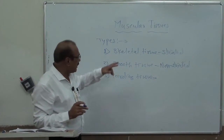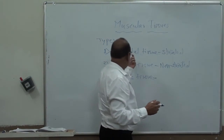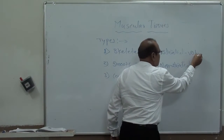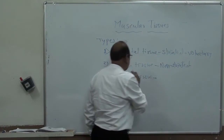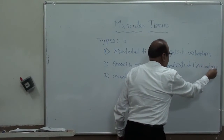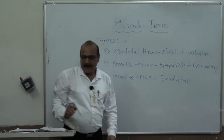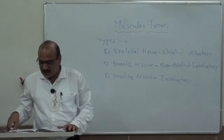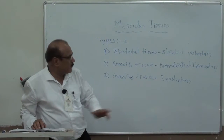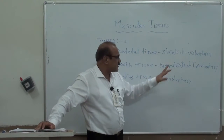Skeletal tissues are voluntary and smooth tissues are involuntary. Cardiac tissues are also involuntary. Voluntary tissues are tissues which are under the control of our willpower, while involuntary tissues are those not under the control of our willpower.